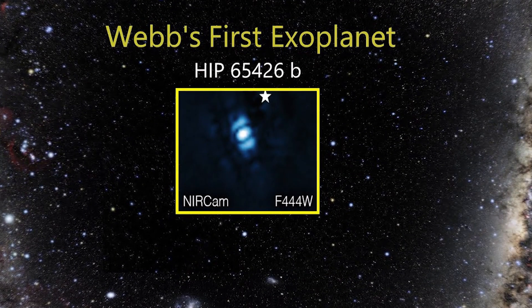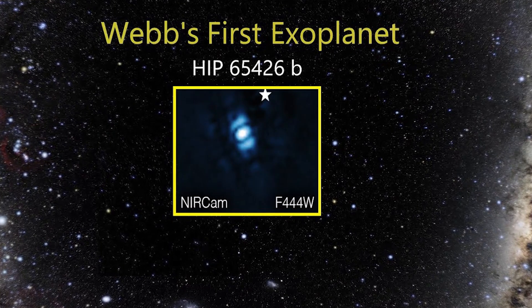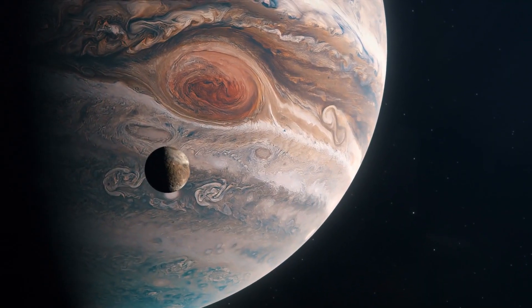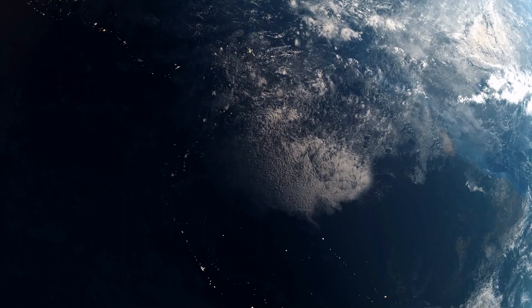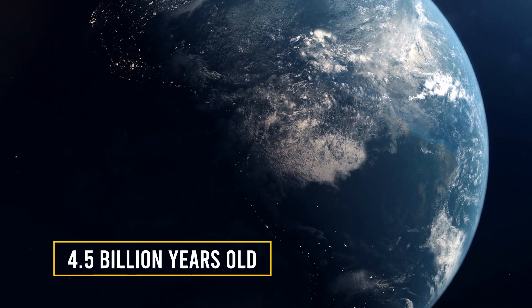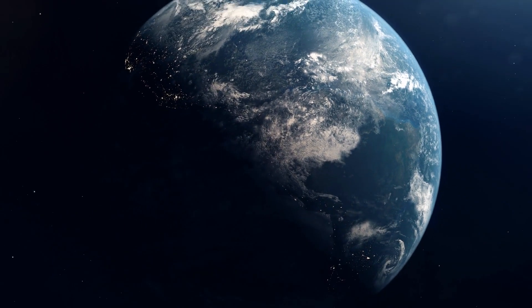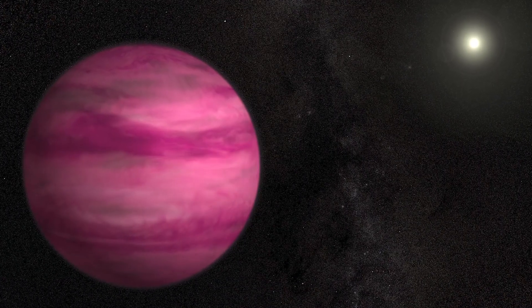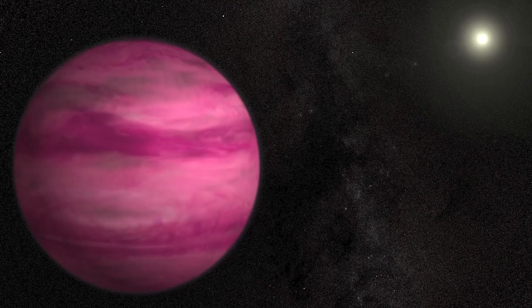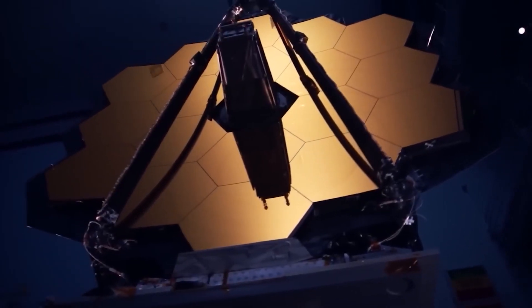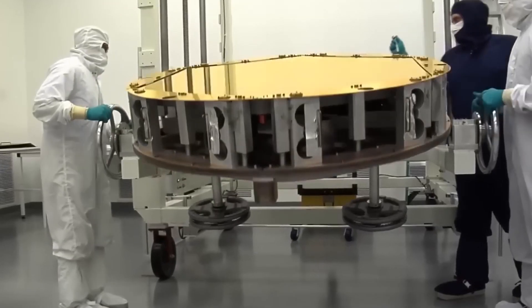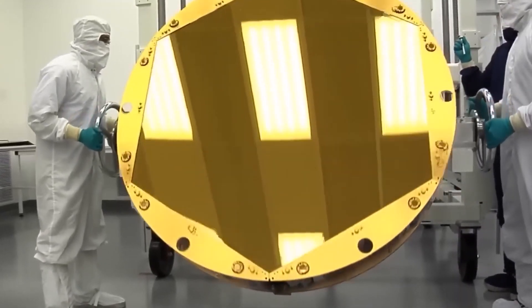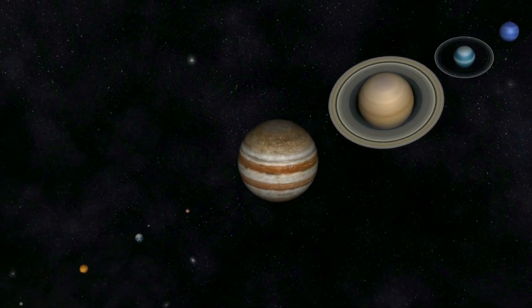The James Webb Telescope has captured an exoplanet called HIP 65426b, which is about six times the mass of Jupiter. It's a young planet about 15 to 20 million years old, compared to the Earth, which is about 4.5 billion years old. The exoplanet is referred to as a gas giant, implying that it lacks a rocky surface and cannot be habitable. NASA made an official release of this image on September 1st. The image reveals that Webb has a powerful infrared gaze that can easily capture worlds outside our solar system.